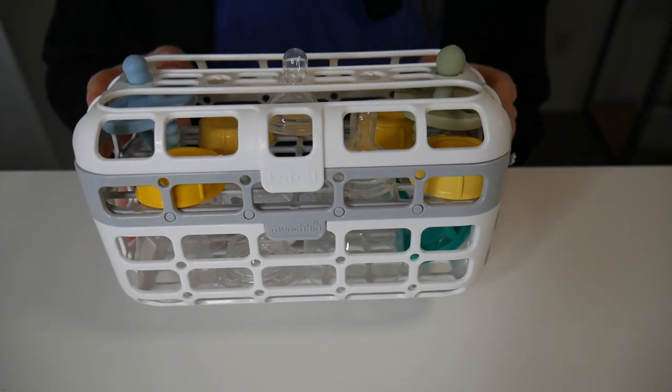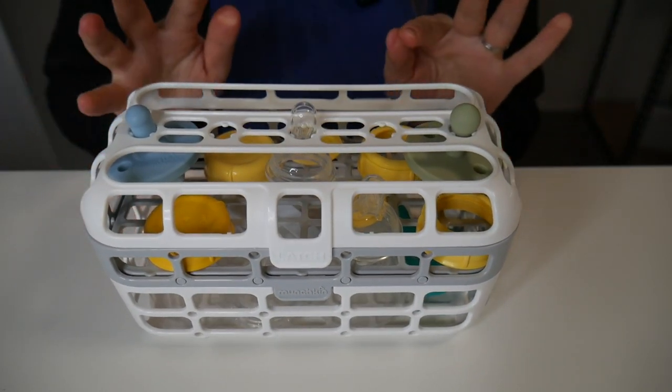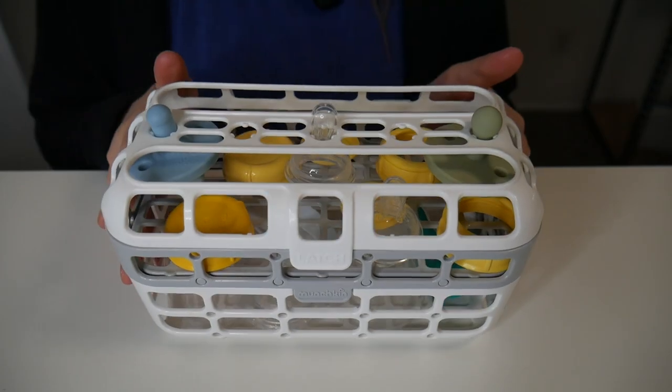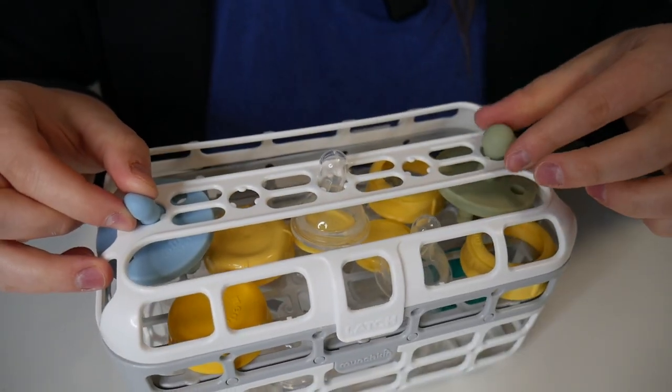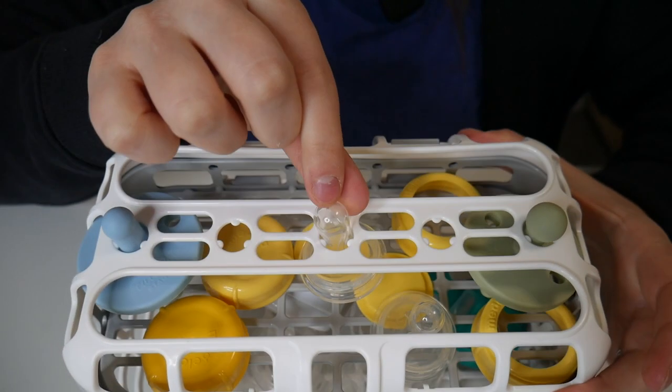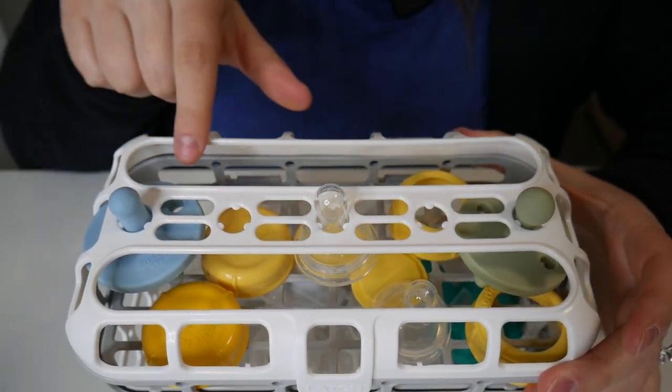I just went ahead and got this all loaded up and ready for the dishwasher. I want to walk you through what I put in here. You can see along the top I put a couple of pacifiers here, and I used one of these holes for a bottle nipple. I have some other little small pieces and accessories for my bottles inside here.